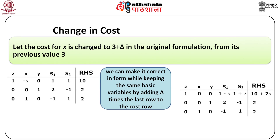Let the cost for x be changed to 3 plus delta in the original formulation from its previous value of 3. After doing the same operations as before — that is, the same pivots — we would end up with the tableau as given. This is not the optimal tableau as it does not have a correct basis, for example, look at the column of x. But we can make it correct in form while keeping the same basic variables by adding delta times the last row to the cost row.